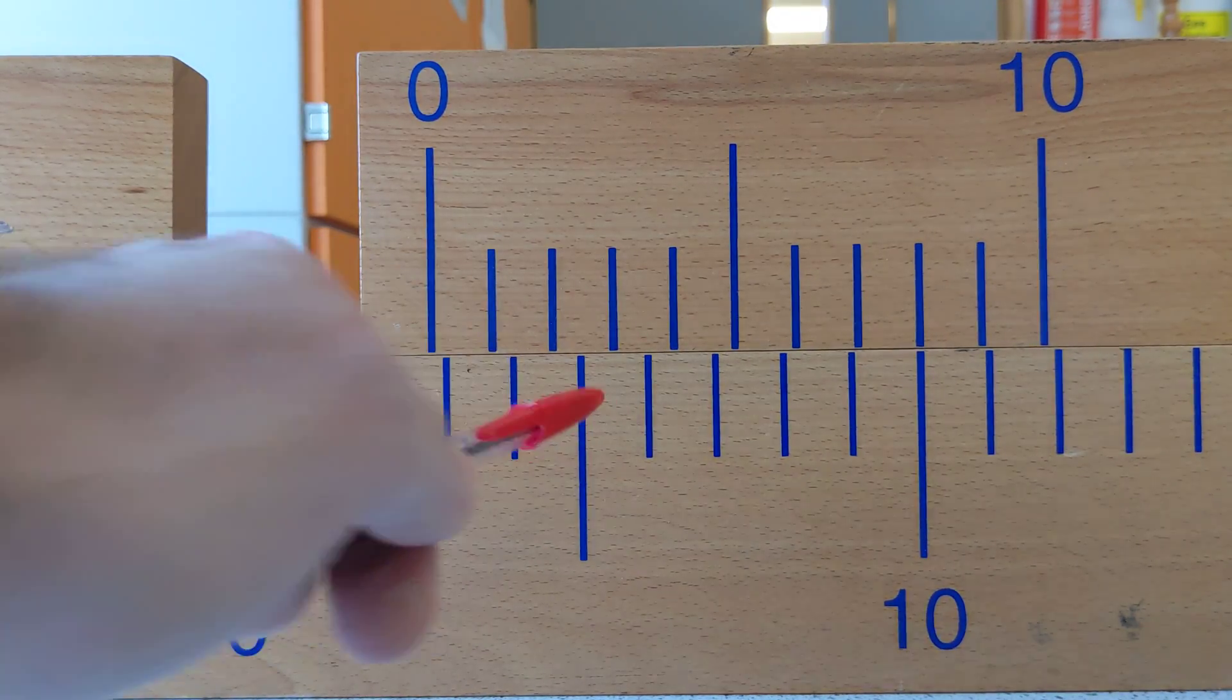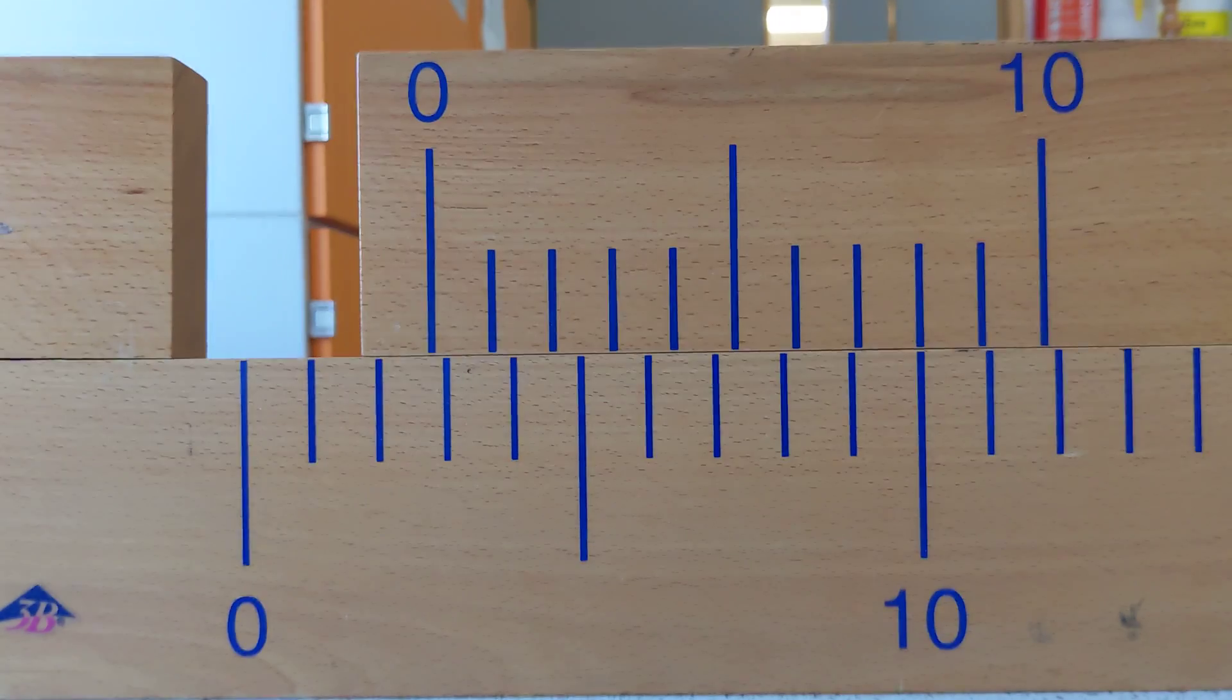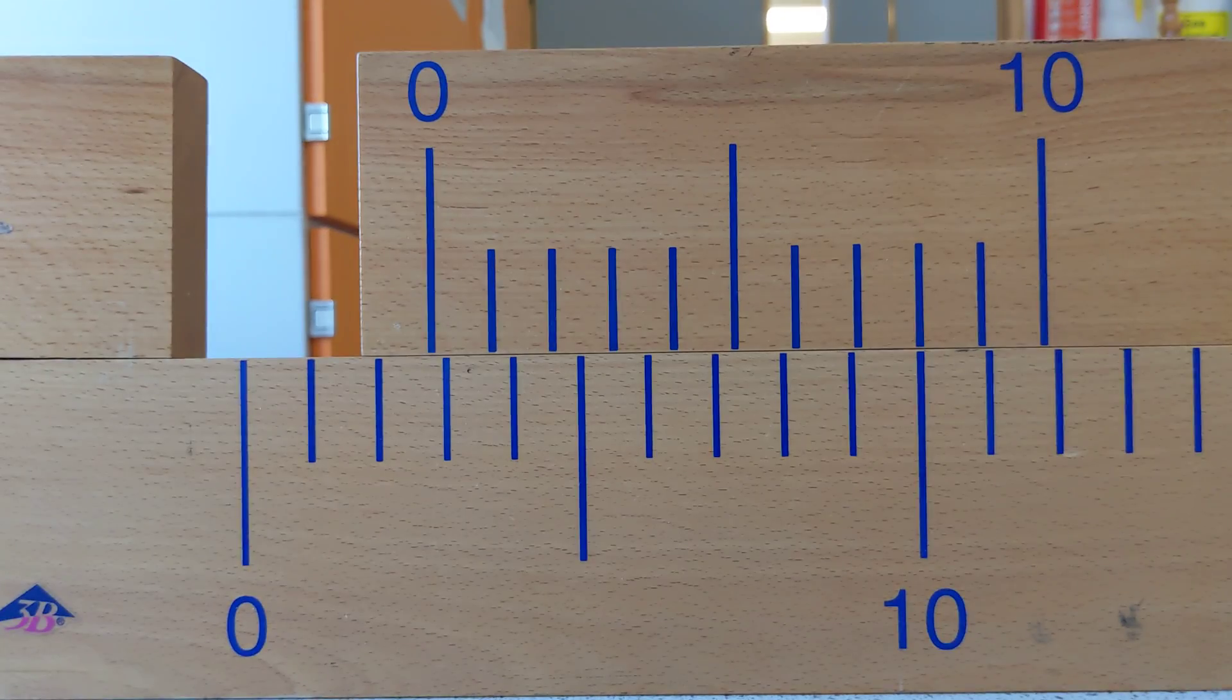So this is 2.8 of whatever the unit is along the main scale. That's how you read a vernier.